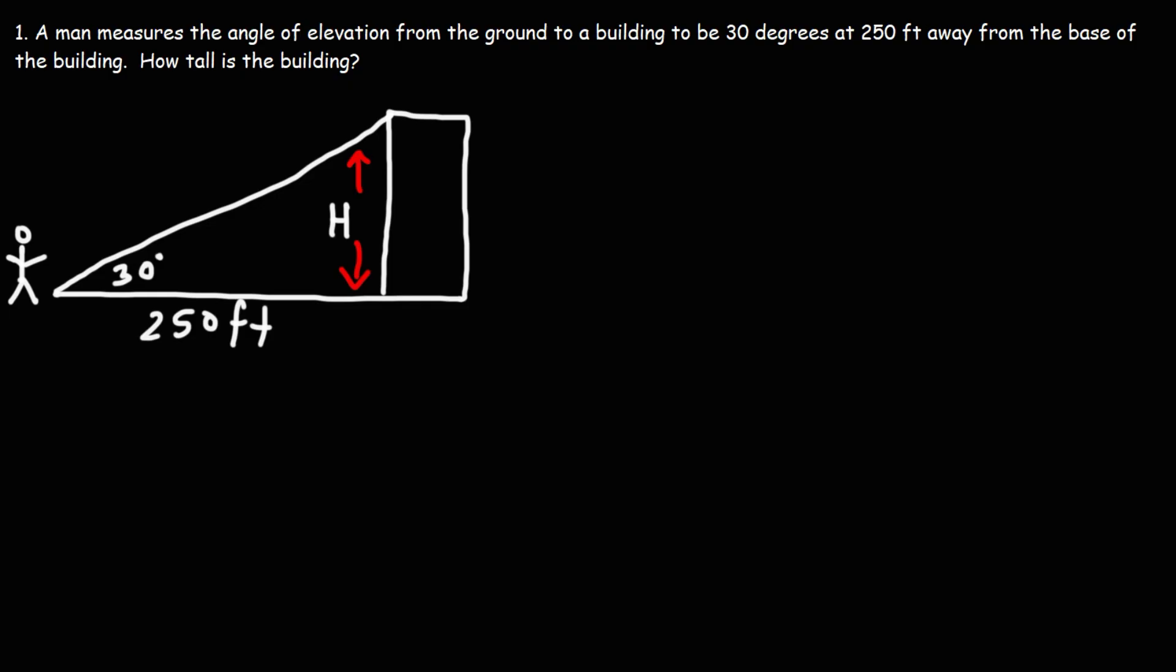So in this case, we need to use the trigonometric ratios. Perhaps you remember the expression SOHCAHTOA. We need to use this part of that expression. So tangent of the angle of 30 degrees is equal to the opposite side divided by the adjacent side. Opposite to 30 is H, and the adjacent side is 250.